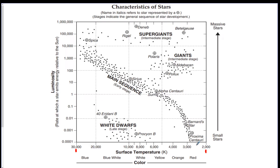The temperatures are also associated with color on the bottom of the diagram. Red is a cooler temperature and blue is your hotter temperature. In between, orange is second hottest, then yellow, then white, then blue-white, then blue.